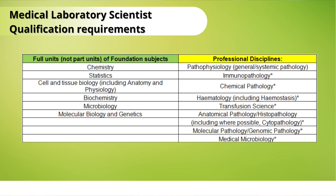For the qualification, there are very specific course units you should have taken: foundation course units and professional disciplines. You are required to have finished all the foundation courses or units, and you should have at least two or three of the professional disciplines — three is preferred, two is acceptable but three would be better. The foundation units include chemistry, statistics, and others. Professional disciplines include chemical pathology, hematology, and others.